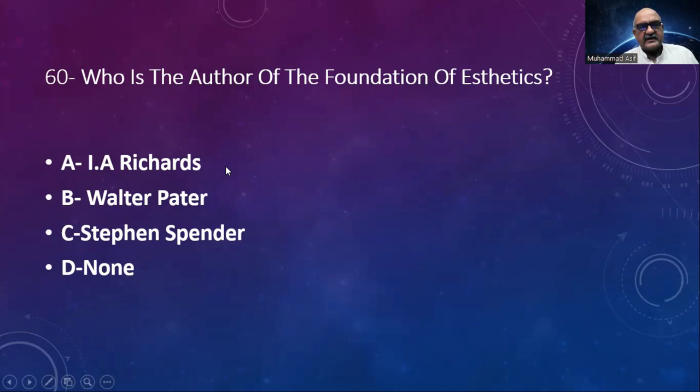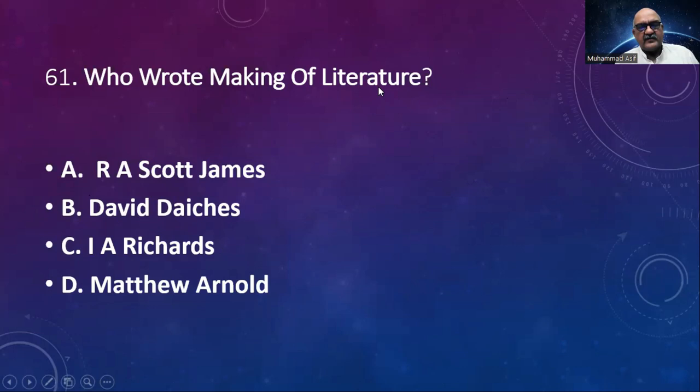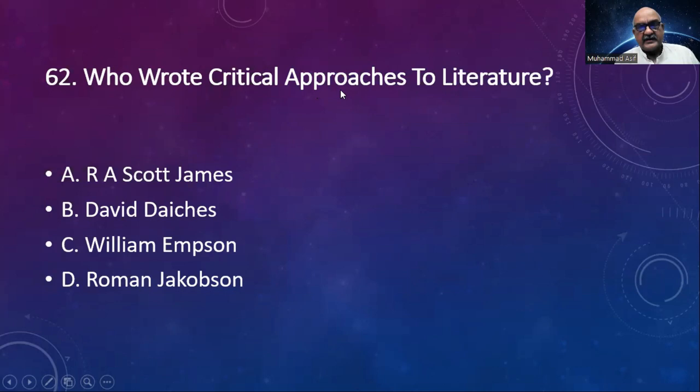Number 61: Who wrote The Making of Literature? Options: R.A. Scott James, David Daiches, I.A. Richards, Matthew Arnold. The answer is R.A. Scott James. Number 62: Who wrote Critical Approaches to Literature? Options: R.A. Scott James, David Daiches, William Empson, Roman Jakobson. The answer is David Daiches.